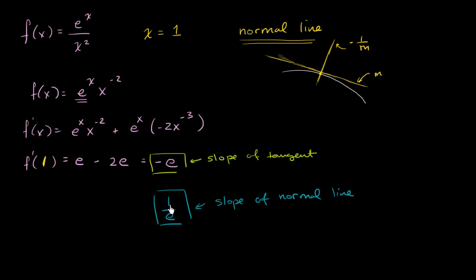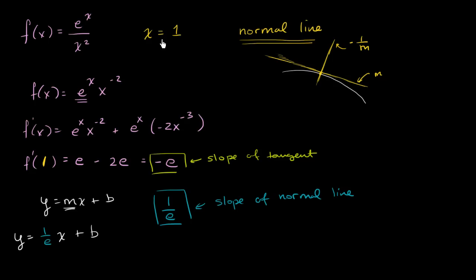Our goal isn't just the slope of the normal line — we want the equation of the normal line. We know the equation of a line can be written as y equals mx plus b, where m is the slope. So we can say y is equal to 1 over e times x plus b. To solve for b, we recognize we know a point this line goes through: when x equals 1, y is e to the first over 1, which is just e. So this goes through the point (1, e).